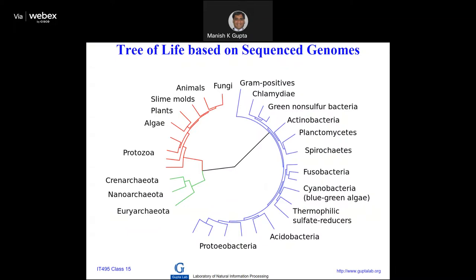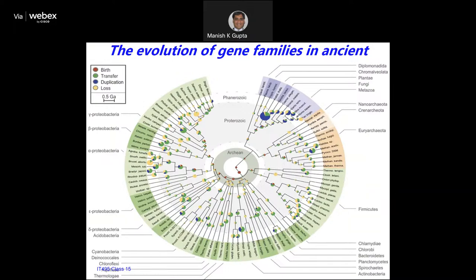People also started finding the tree of life — taking all these different genomes and trying to find relationships. There is one popular software called Mega, written by Sudhir Kumar at Arizona State University, where you can actually understand the relationship among different strands of genomic data. Now there are challenges — if the data is very huge the complexity will be more, so how do you design efficient algorithms for handling the data? That is ultimately a computer science challenge.